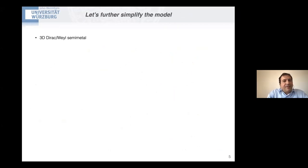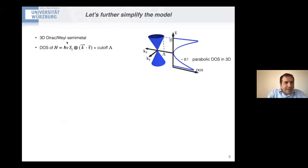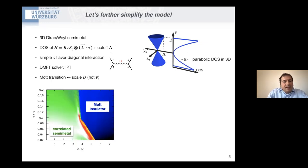So you would never be able to reach this in a k dot p description with linear bands forever. You always, in that case, stay in weak coupling. Whereas here, because of the presence of this finite cutoff, we can reach the Mott transition. So let's further simplify the description of this. And let's just take three dimensional semi-metals, whose DOS density of states can come from, for instance, a Hamiltonian of this kind, including an energy cutoff or a cutoff from the momenta that you see here. That's our parabolic DOS. We take the simplest possible flavor diagonal interaction, so diagonal in tau and just opposite spin interaction and use as a DMFT solver the IPT. So that's the Mott transition that I was talking about before.